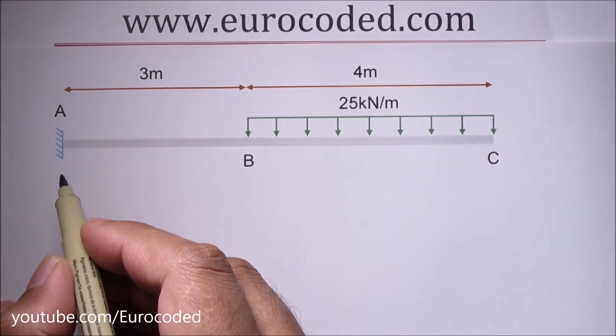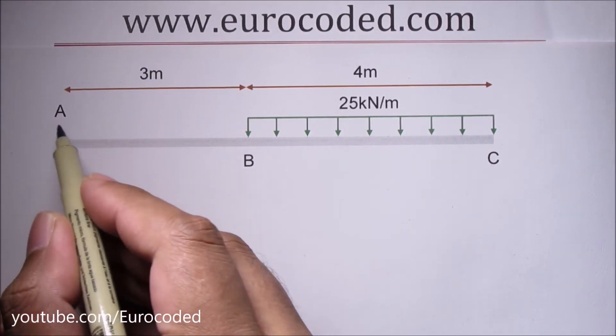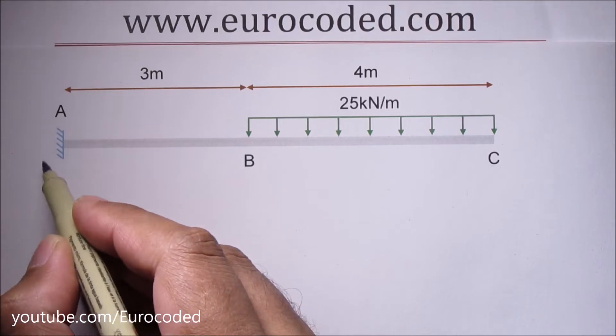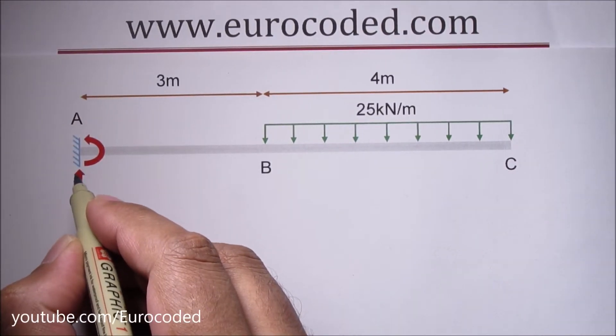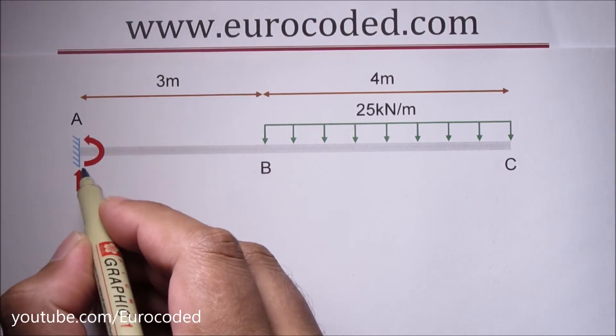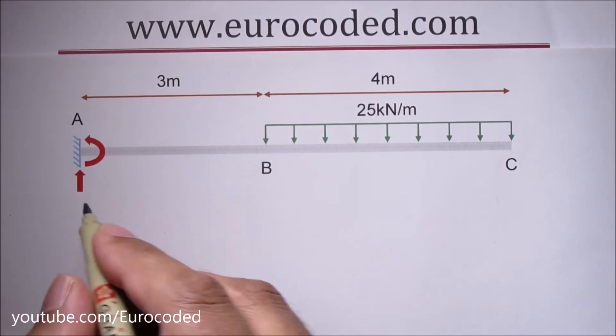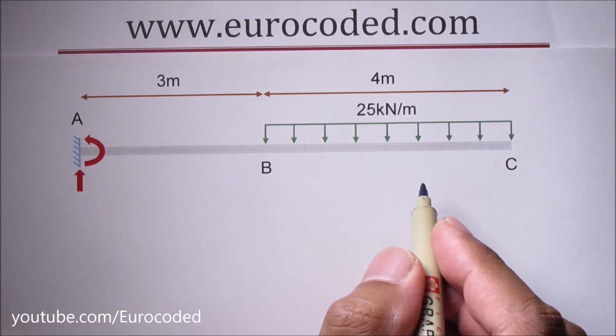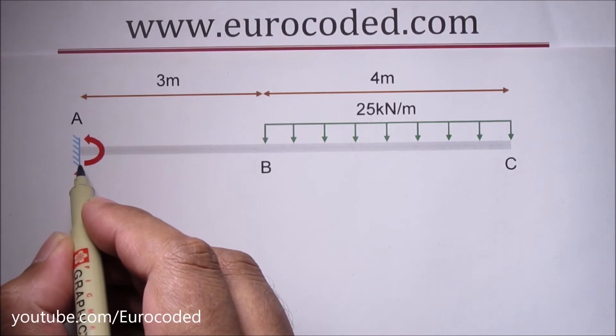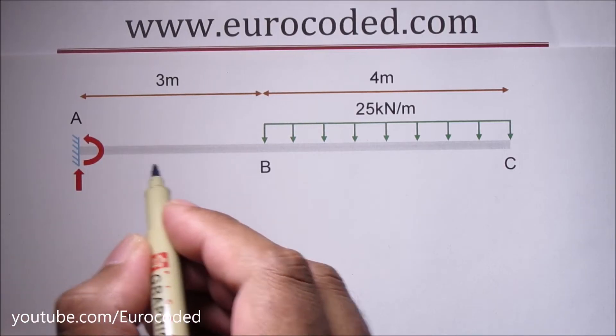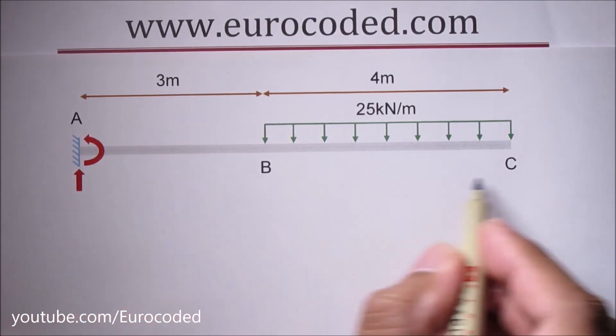In this case we have only one support which is this fixed support at the end. So there is a vertical reaction at point A and a bending moment at point A. By inspection we can say that there is no horizontal reaction at this support because there are no loads applied in the horizontal direction.